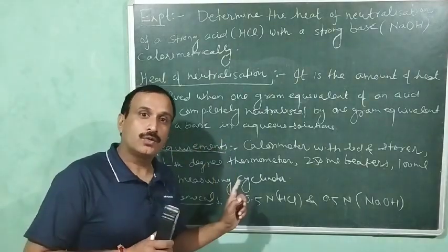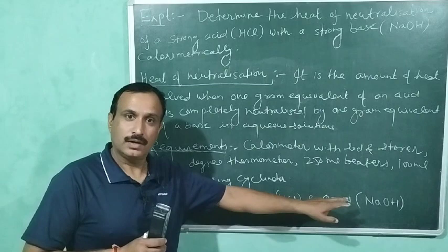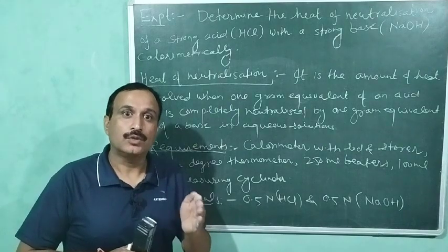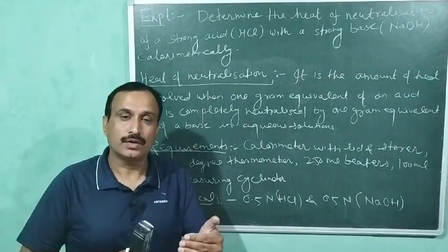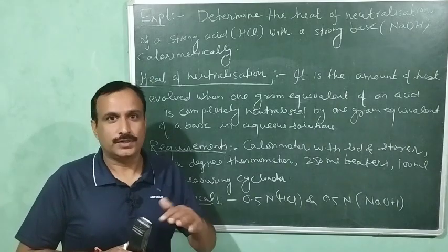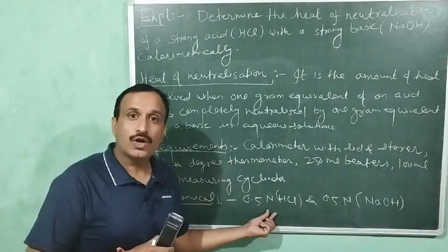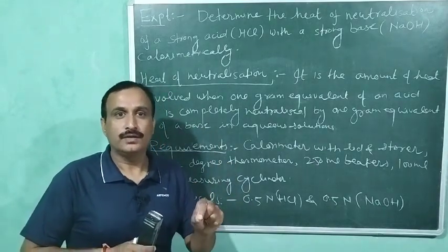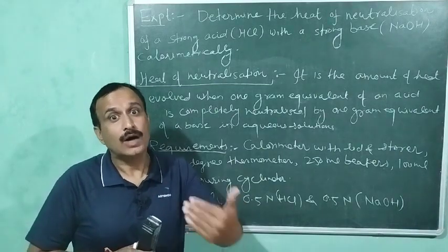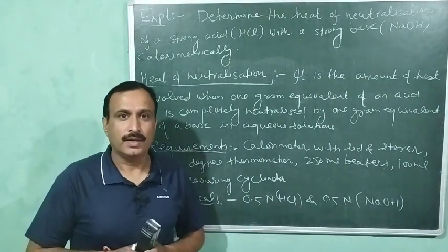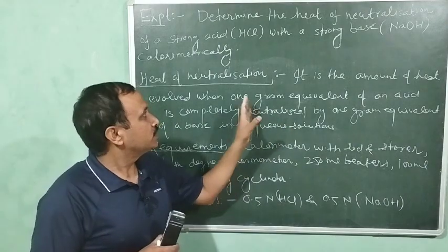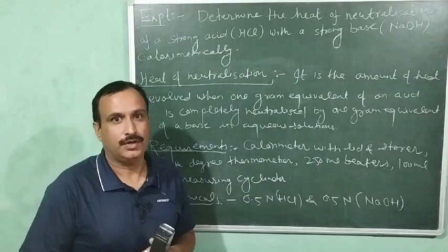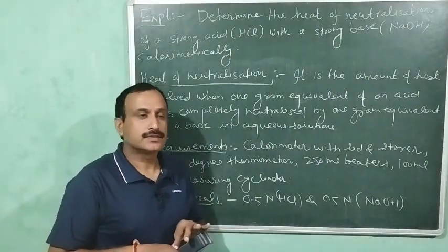The final heat of neutralization will be calculated for one normal HCl and one normal NaOH, because a one normal solution of NaOH contains one gram equivalent of NaOH dissolved per liter of solution — that is 1000 ml. Likewise, one normal HCl contains one gram equivalent of HCl dissolved per liter of solution. As stated in the definition, this heat of neutralization is for one gram equivalent of an acid and one gram equivalent of a base.